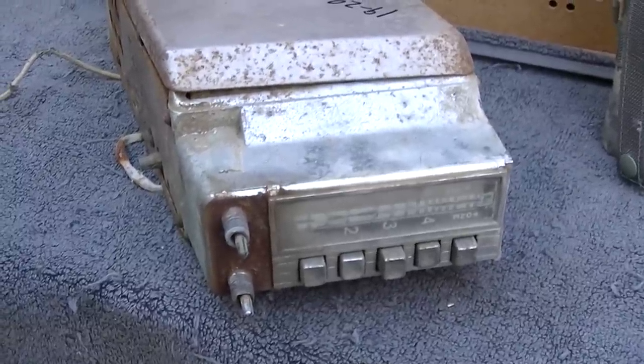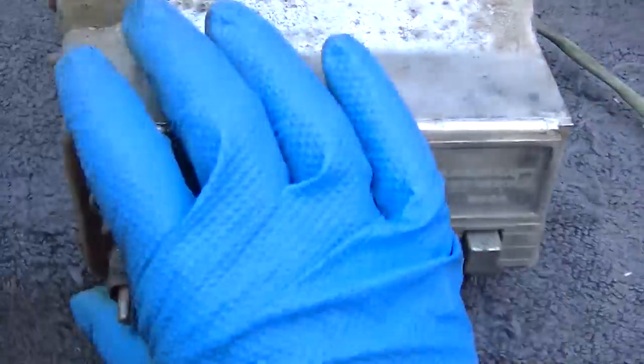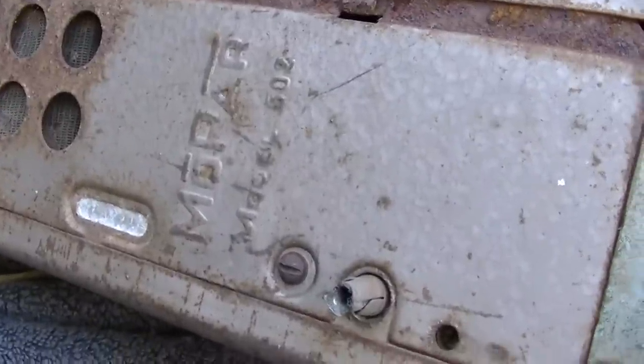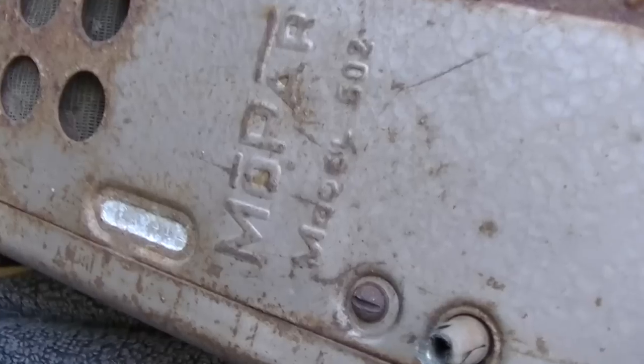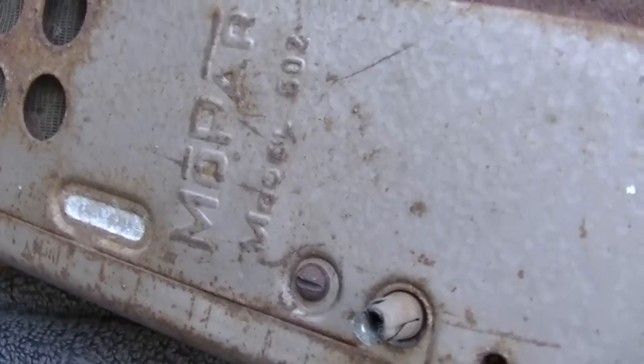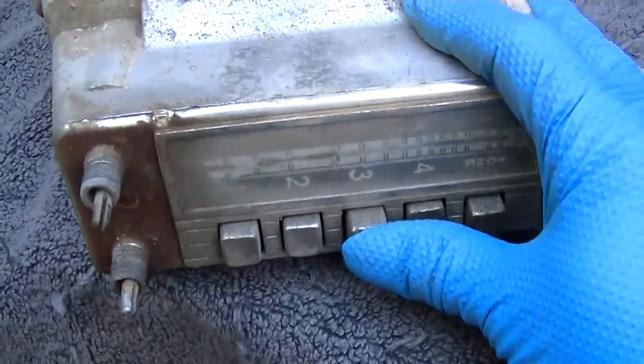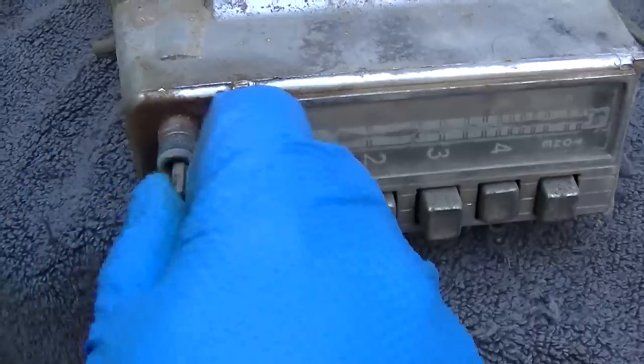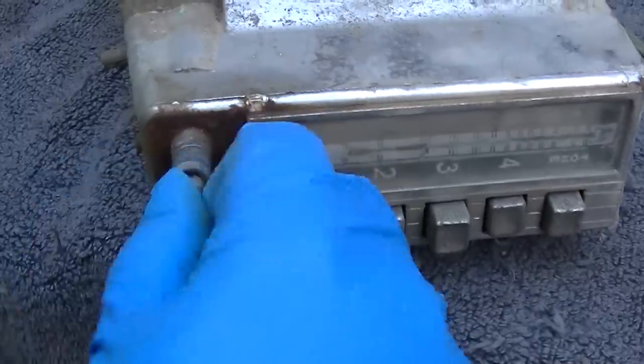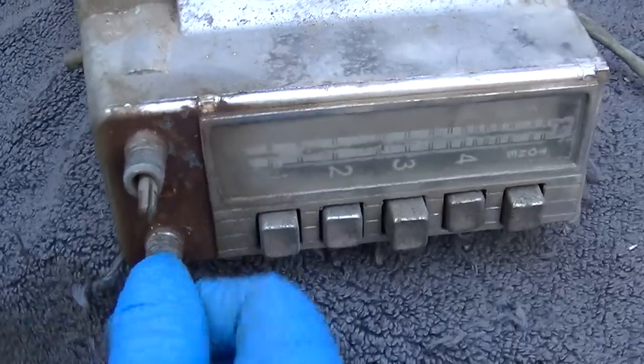So again, late 1940s, I guess it would be a Dodge truck. I'm not good with old cars. But it's a Mopar, model 602, and it's in pretty rough shape. Every button is stuck and doesn't move. Nothing seems to really do anything here. Tuning doesn't do anything.